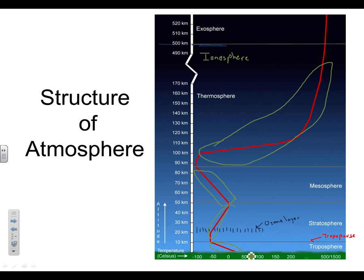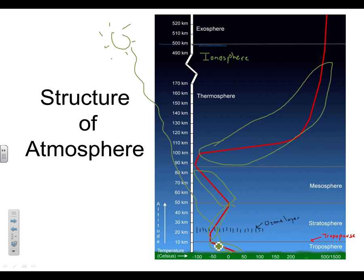Why does it get colder in the troposphere with altitude? As you get farther from the surface of the Earth, there's less heat. The sun shines down, infrared radiation gets absorbed by the ground, and the ground radiates it back into the atmosphere — so it's hotter at the surface and cooler as you get farther away. Why does it get warmer in the stratosphere? Because of the ozone — it absorbs UV light and creates heat. The mesosphere gets colder for the same reason: we're getting farther from the surface and farther from the ozone layer, with nothing to make it hotter.